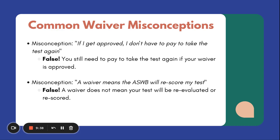Another misconception: a waiver means the ASWB will rescore the test I already took. Some people say, 'I failed by one, so this waiver means they're going to rescore it.' False. A waiver does not mean your test will be reevaluated or rescored. The waiver is only going to allow you to register for the exam to sit again sooner than 90 days. It has nothing to do with scoring. It has nothing to do with licensure.